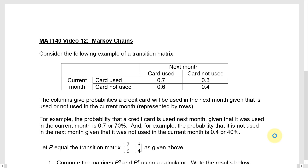This is MAT 140, video number 12 on Markov chains. Consider the following example of a transition matrix.